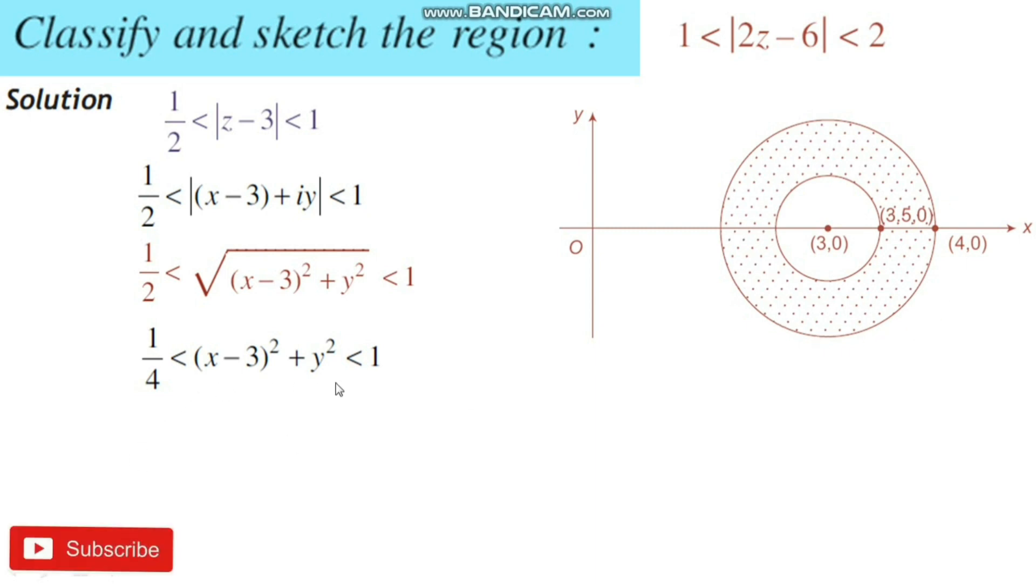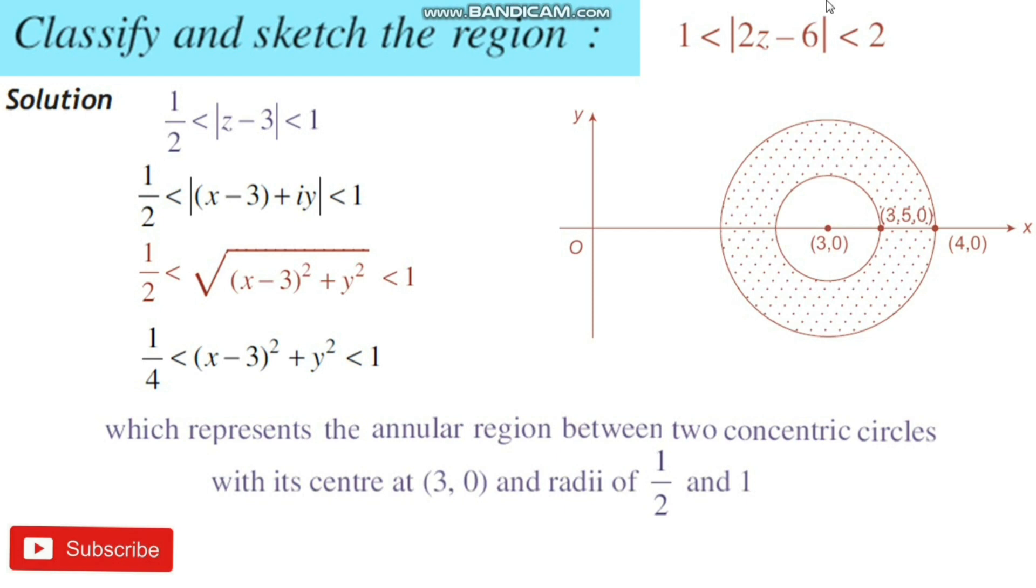We have the symbols less than. That is why this region represents the annular region between two concentric circles with center (3, 0) and radii 1/2 and 1 respectively.